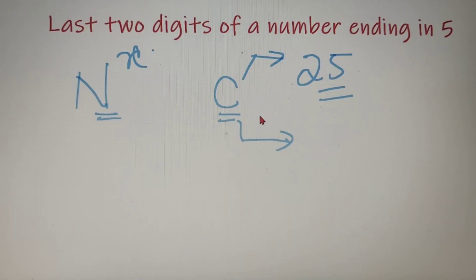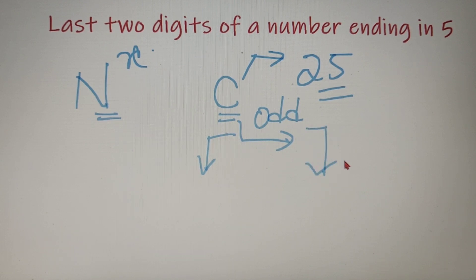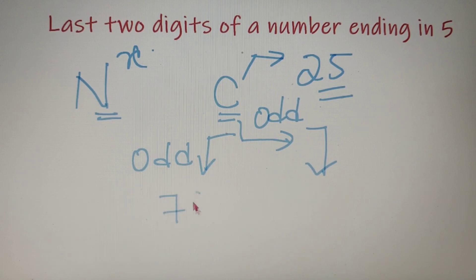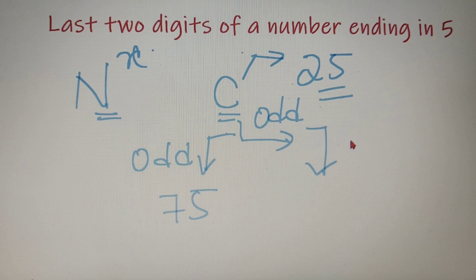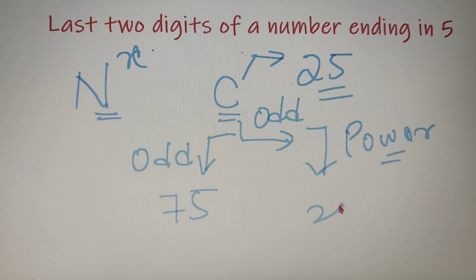Now if the second last digit is odd, then there are two possible cases: one when the power is odd, and the second when the power is even. So if the power is odd and the second last digit is also odd, then the last two digits of this number will be 75. And when the second last digit is odd but the power is even, then the last two digits will always be 25.